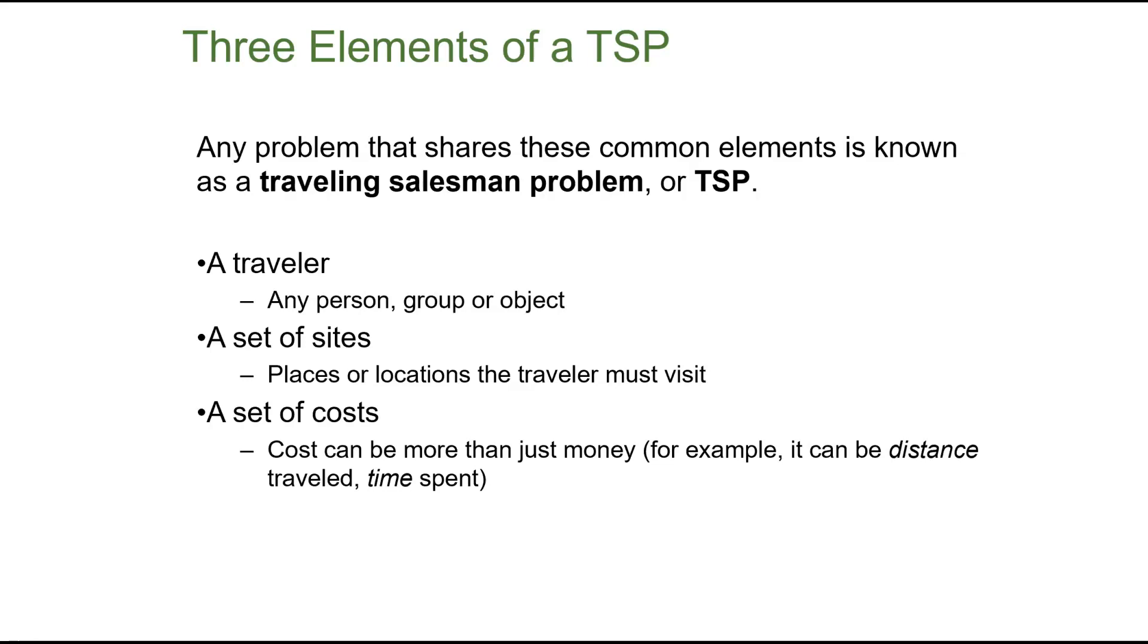For it to be a TSP or traveling salesman problem, we need a traveler - a person, a group, an object that's going to move - and a set of sites, where they're going, places or locations that they must visit, and then the cost. Now, we think of cost as money, but cost in this sense is going to be what the general cost is. Maybe it's time, maybe you're in a hurry, and you don't care if you have to go miles out of the way because all the stops are on the highway. Maybe it is money. Maybe you care more about gas. Maybe it's time spent. Whatever it is, that's your cost.